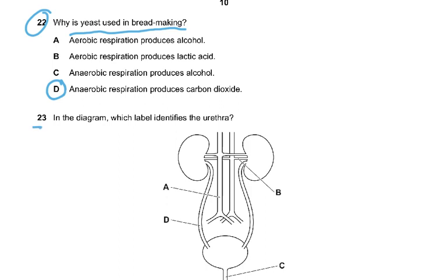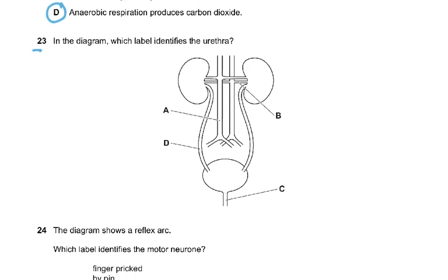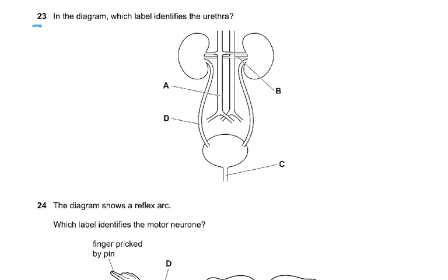Question 23: In the diagram, which label identifies the urethra? That is very basic — the answer is C.